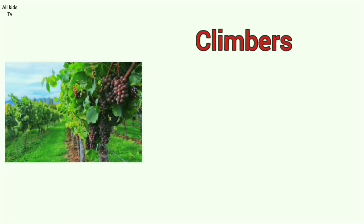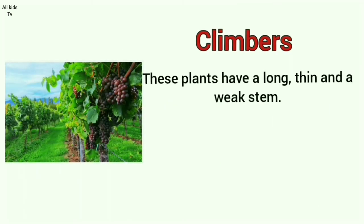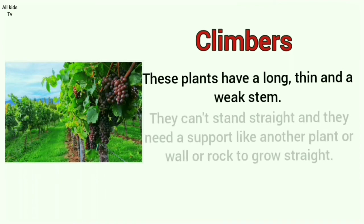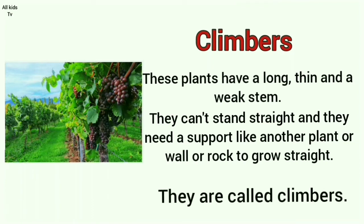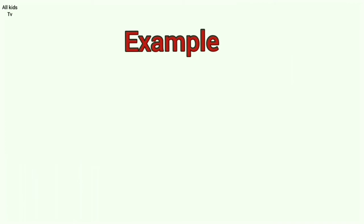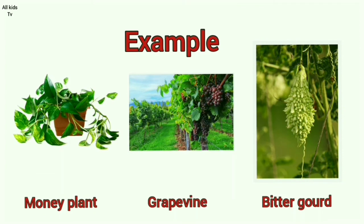Climbers. These plants have a long, thin and weak stem. They cannot stand straight and they need a support like another plant, wall or rock to grow straight. They are called climbers. Some examples of climbers are money plant, grape vine and bitter gourd.